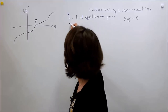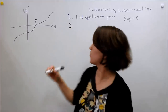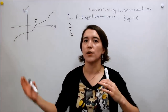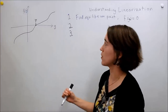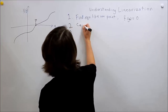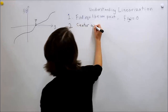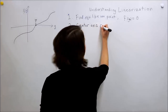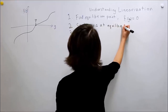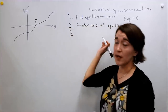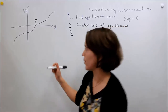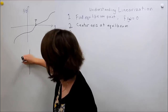The second and third things are very related. The second thing we need to do is to re-center the axes for our function around the equilibrium point. We're going to center the axis at equilibrium. The reason we have to do this is because all of our linear functions have to go through zero.